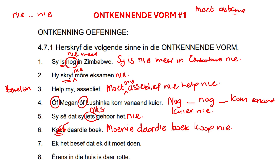Ek het gese dat ek dit moet doen. What's our verb here? 'Het'. After our verb comes 'nie'. So: Ek het nie gese dat ek dit moet doen nie. Easy peasy. Last one: Erens in die huis is daar rotte. We know 'erens' is a special word that has to change to 'nêrens'. So: Nêrens in die huis is daar rotte nie.